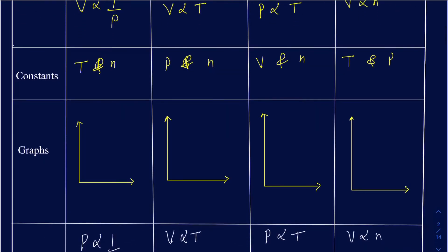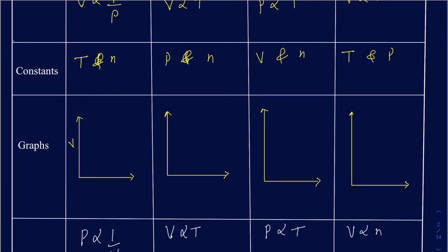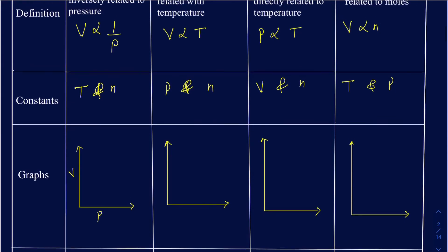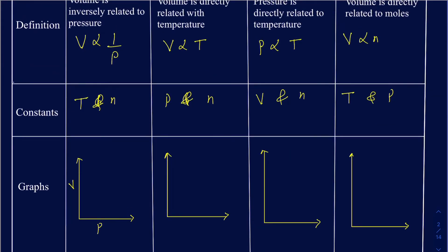Now let's talk about graphing these laws. For Boyle's Law, if I put volume on the y-axis and pressure on the x-axis, the graph shows an inverse relationship — it curves like a hyperbola. When volume is high, pressure is low. Picking point A, volume is high but pressure is low. At point B, pressure is high and volume has significantly decreased. They have an inverse relation with one another.